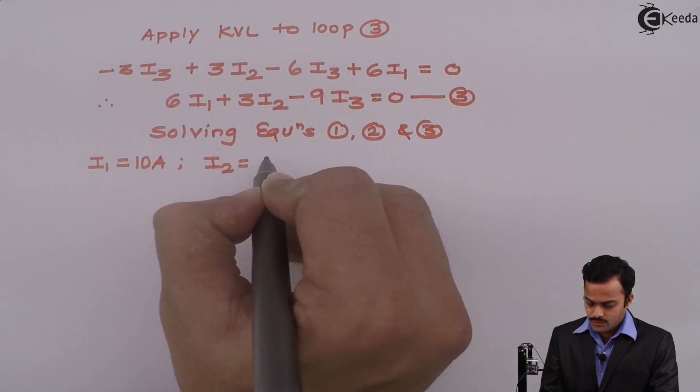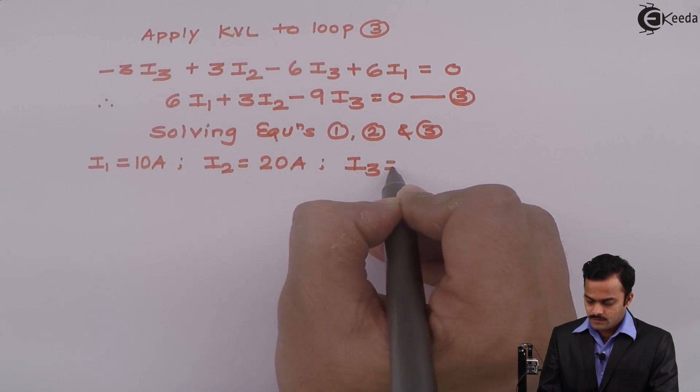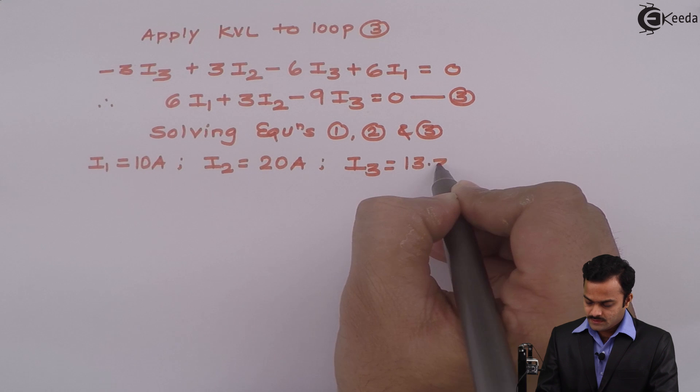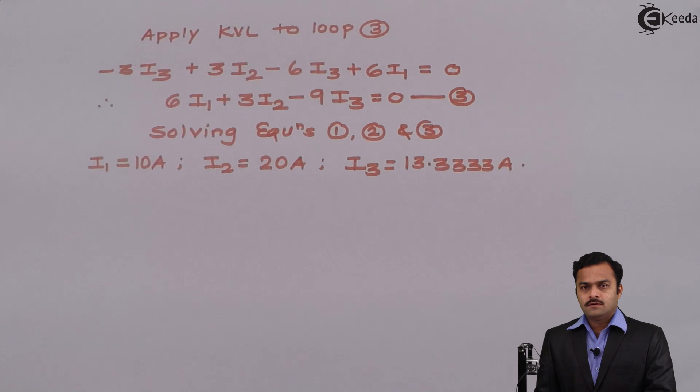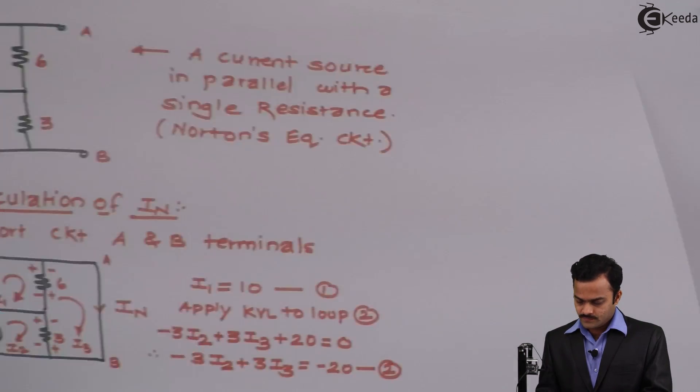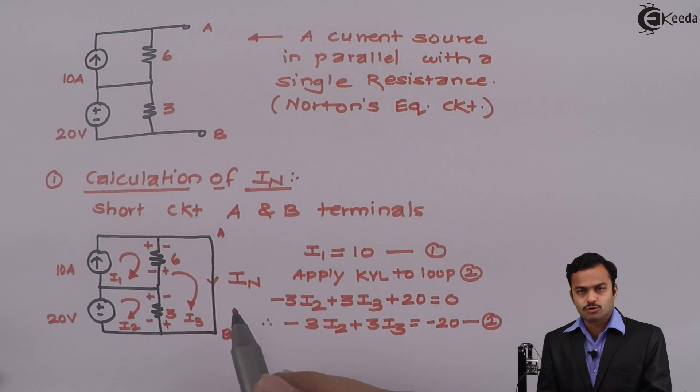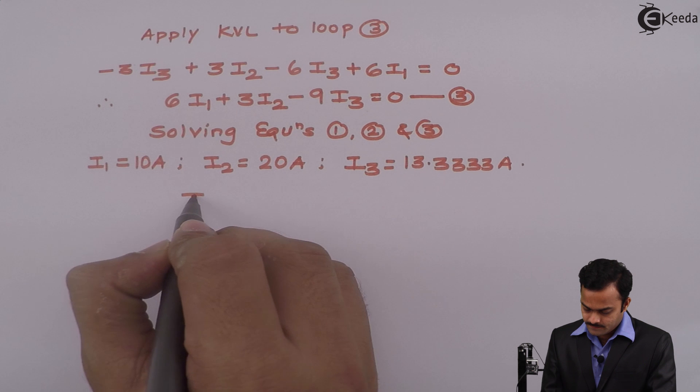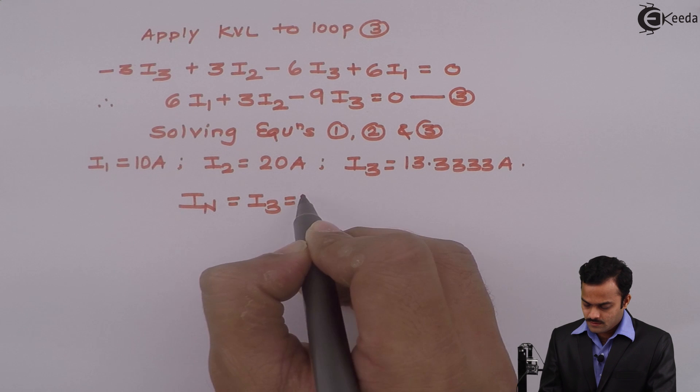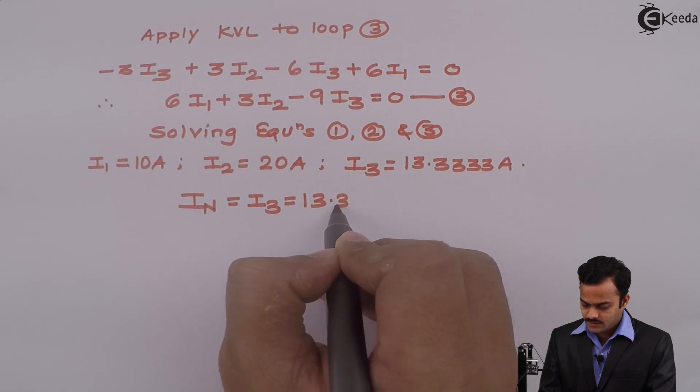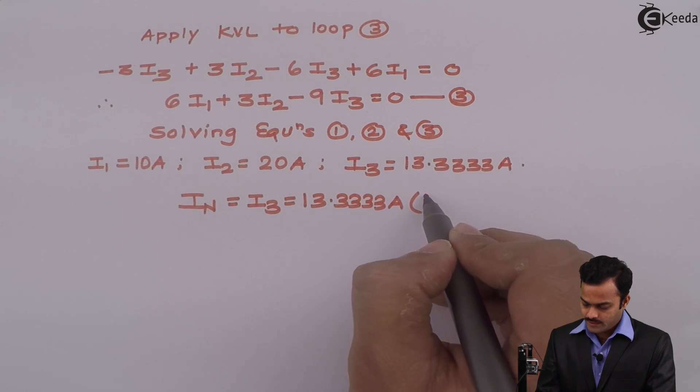I2 is 20 ampere and I3 equal to 13.3333 ampere. I want In, so if I see properly I3 is nothing but In in the same direction, that is from A to B. So I can write Norton's current In equal to I3, 13.3333 ampere, and the direction will be from A to B.